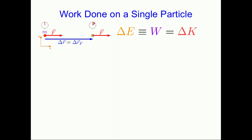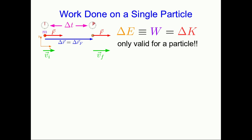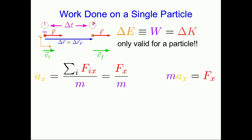We have our definition that the work is the change in energy of the system, and in this case that's equal to the change in kinetic energy. But be cautious — this is only valid because this is a particle, so any change in energy is a change in kinetic energy since it has no internal energy. We'll think about a time interval during which the particle goes from some initial velocity to some final velocity and accelerates. From the equation of motion, we can write the x-component of acceleration in terms of a sum of x-components of forces, but here there is only one force, so we just have F_x over m, which we can rearrange into a convenient form.